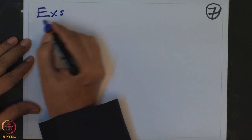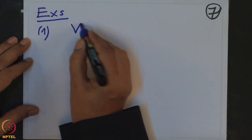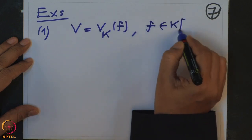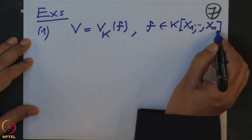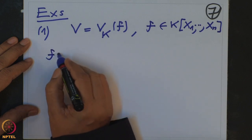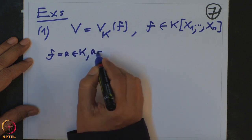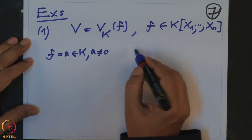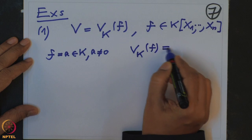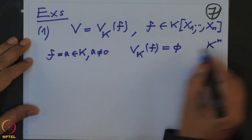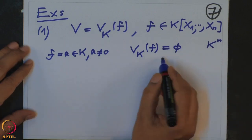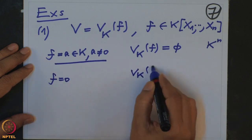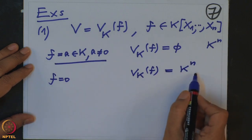First example: suppose V is defined by only one equation F, a polynomial in N variables. If F is a non-zero constant, then V_K(F) is the empty set, because no point in K^N can make a constant non-zero equal to zero. If F = 0, then V_K(F) is the whole K^N. Now suppose F is a non-constant polynomial.